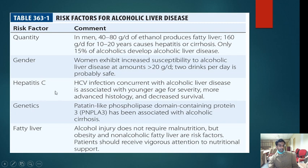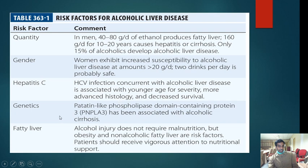Concurrent hepatitis C infection with alcoholic liver disease is associated with higher severity at a younger age — such patients have almost double the risk of developing cirrhosis. Genetically, the PNPLA3 gene — patatin-like phospholipase domain-containing protein 3 — has been associated with cirrhosis. Obesity and non-alcoholic fatty liver disease are also risk factors.